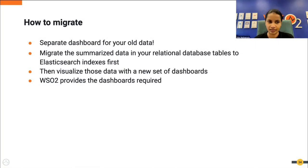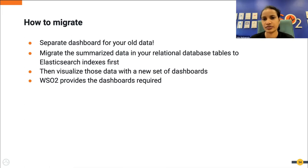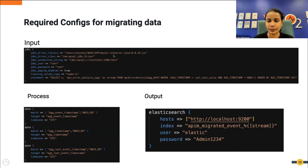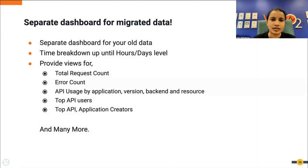The good news is that there is a way to do this migration. The approach we suggest is to migrate the summarized data from your relational database tables to Elasticsearch indexes first. Then it's only a matter of visualizing the data via a new set of dashboards which use the migrated data. To migrate data to Elasticsearch, you can use Logstash - you just have to add a simple configuration as shown in the image, pretty simple configs. WSO2 will provide you with a new set of dashboards to visualize the migrated data.